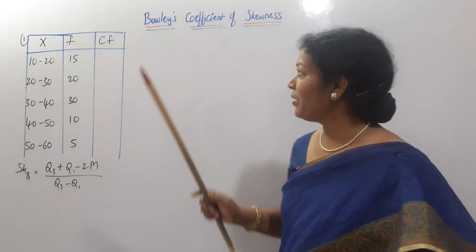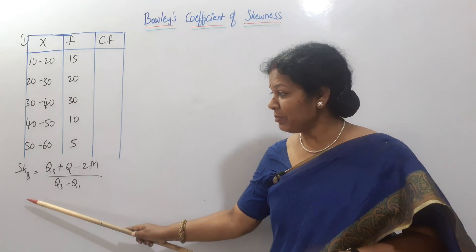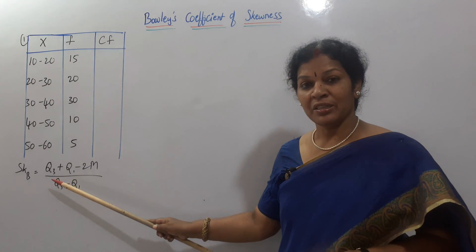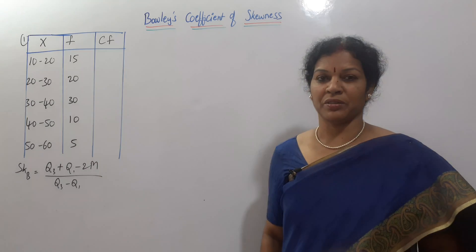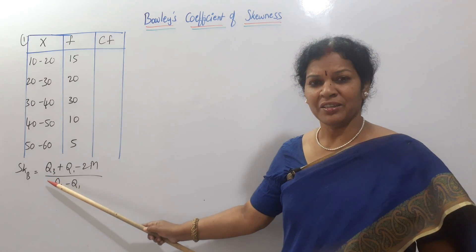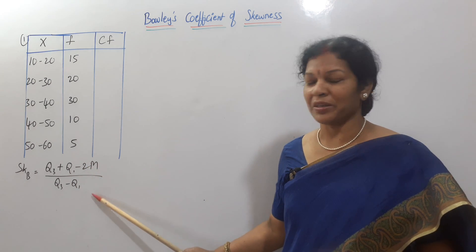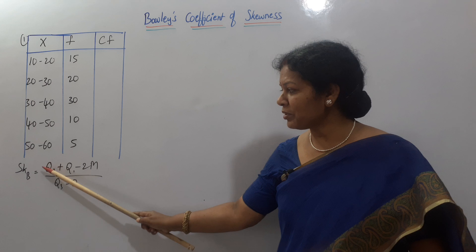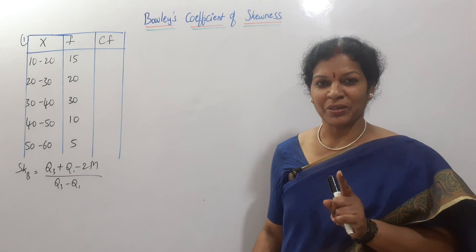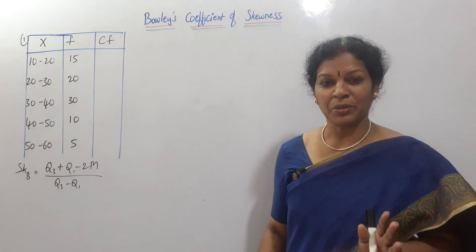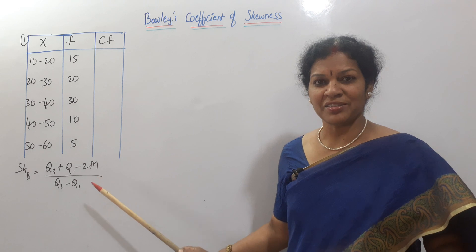Now see the formula for SKB, Bowles' coefficient of skewness, formula is this one. SKB, B means Bowles, SKB is equal to Q3 plus Q1 minus 2M by Q3 minus Q1. Say along with me, Q3 plus Q1 minus 2M by Q3 plus Q1. If you remember this Q3 plus Q1, rest of the formula automatically comes. Q3 plus Q1 minus 2M by Q3 plus Q1. Here plus, here minus, and here minus 2M, that is it.